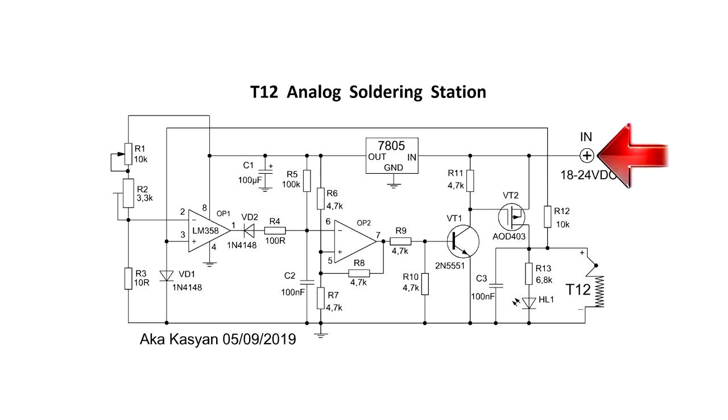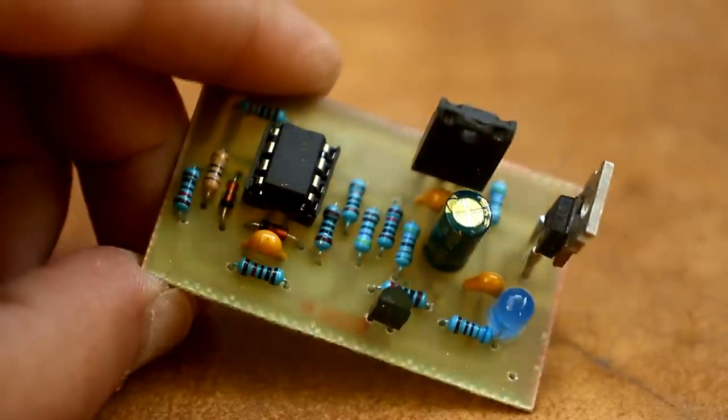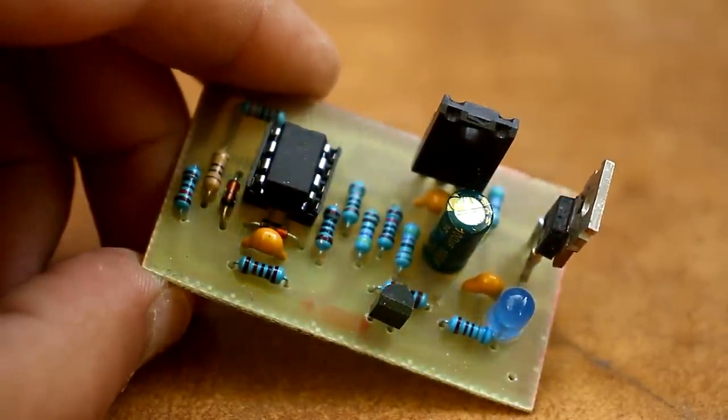First, we apply a constant voltage of 18 to 24 volts to the circuit, preferably 20. At the moment, the trimmer must be at minimum value and the variable resistor at maximum. We take a thermometer and measure the temperature at the end of the tip after it has completely warmed up. If the temperature is less than 450 degrees Celsius, by slow rotation of the trimmer, we achieve the required temperature. After setup, I have this trimmer replaced by a constant resistor.